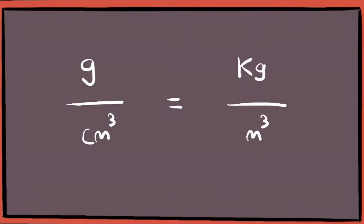So to convert it to kg per meter cube, we need to do the conversion accordingly, meaning we need to convert the numerator and denominator respectively on their own.